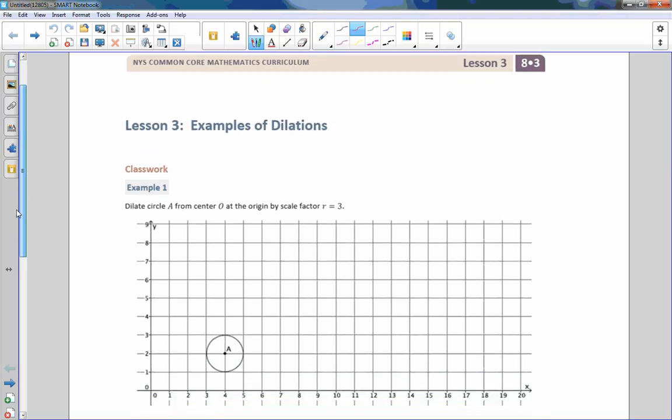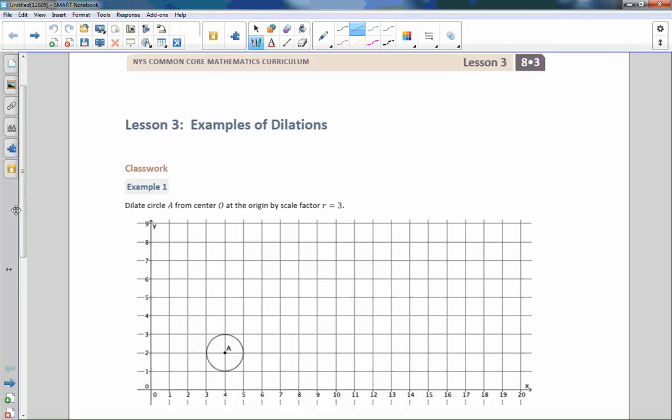Hi there, Mr. Holcomb here with another episode of the math behind the modules. This is lesson three, examples of dilations. In this lesson, we're going to dilate circles and ellipses, and then we're going to try to determine if we have already dilated something, enlarged it, what do we have to do to get it back to our original?